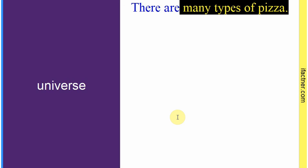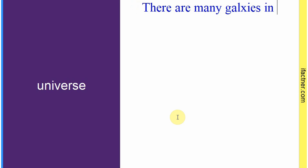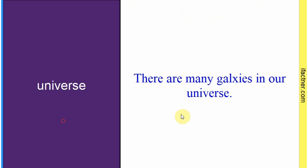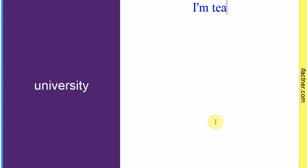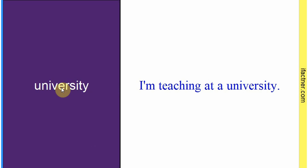Word hai: 'universe'. Sentence: 'There are many galaxies in our universe.' Hamari universe mein — hamari kaainat mein — bahot zyada galaxies hain. Toh 'universe' hoti hai 'kaainat'. Word hai: 'university'. Sentence: 'I'm teaching at a university.' Mein ek university mein padha raha hoon. 'University' padhne-padhane walay idaaray ko kehte hain — school ke baad college, college ke baad university — khas taur pe jahan aap Master's aur PhD ki degree karte hain.